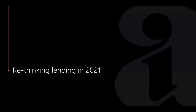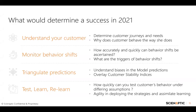With that background, let me switch over to the last section — the core of our webinar: how do we rethink our lending in 2021? From our perspective, I would highlight four key determinants to what success would look like in 2021. The first is understanding your customer — or KYC — but this is a much broader KYC: determining your customer journeys, understanding their needs, and understanding why your customer behaves the way she does. I'll elaborate on these points in the next couple of slides.